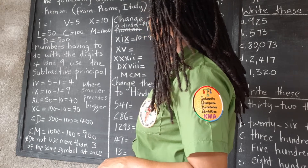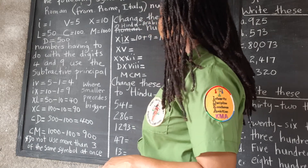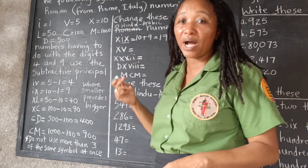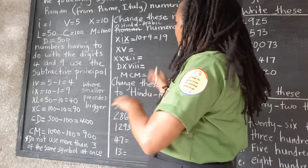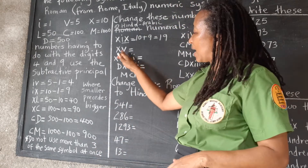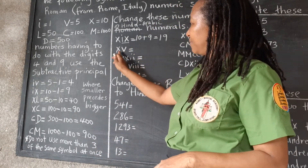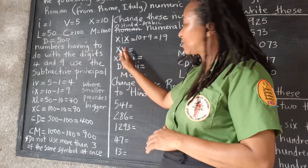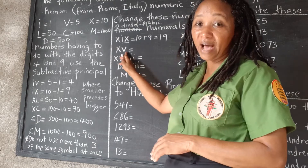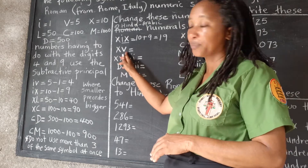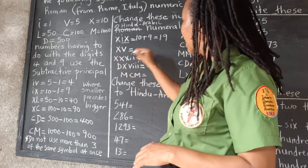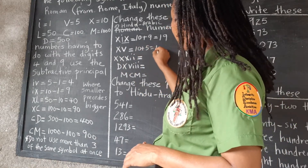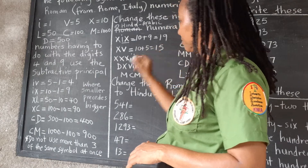They gave us the Roman numerals and we're changing to Hindu-Arabic. Here we have 10 and 5.